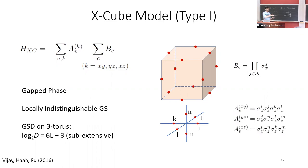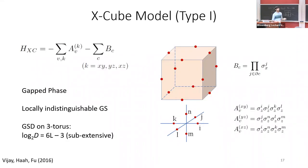The X-cube model is a gapped phase — if you change the eigenvalue of one term in the Hamiltonian from +1 to -1, that costs a finite energy. The ground state degeneracy of this model is 2^(6L - 3) for an L×L×L system — so it depends on the number of lattice sites and changes if you change the system size. The more general formula for different Lx, Ly, Lz is written out. This is a topological degeneracy: you can add perturbations and local terms to the Hamiltonian, and you will not be able to lift this ground state degeneracy.